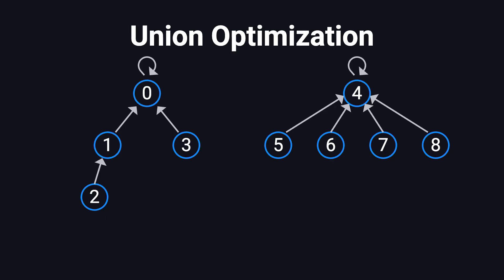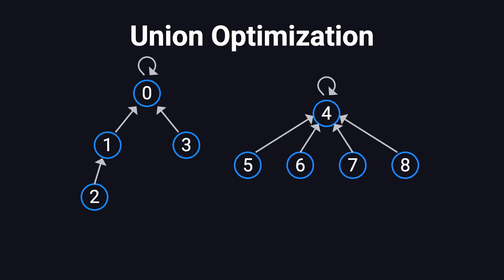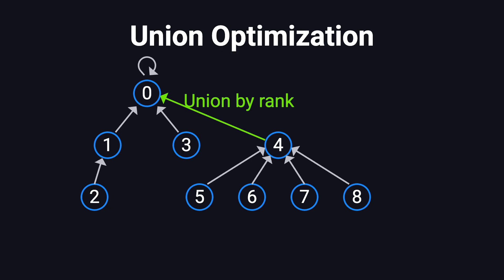For example, let's say we have two subtrees. If we're using union by rank, and the tree rooted at 0 has a height of 2, while the tree rooted at 4 has a height of 1, we make the shorter tree, the one rooted at 4, point to the taller one, rooted at 0.